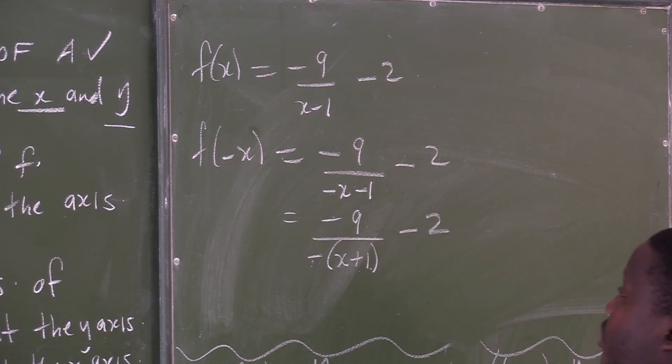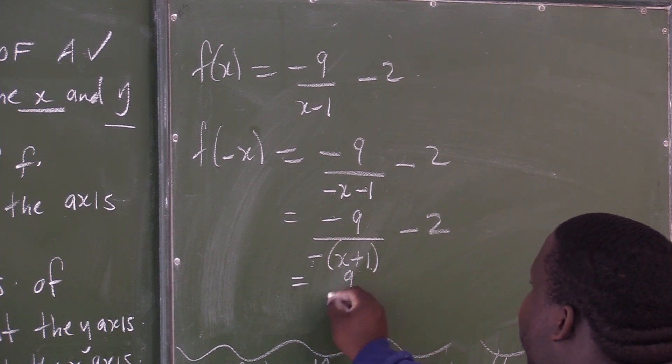To give you 9 over x plus 1 minus 2. This is the new equation.